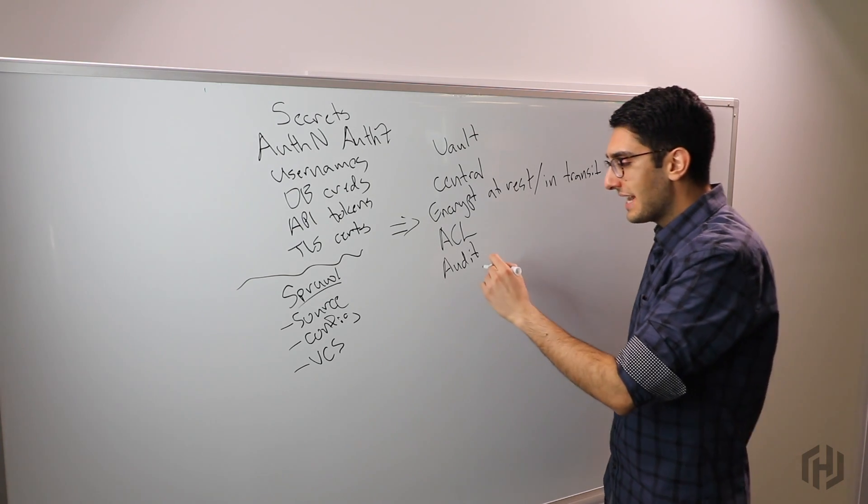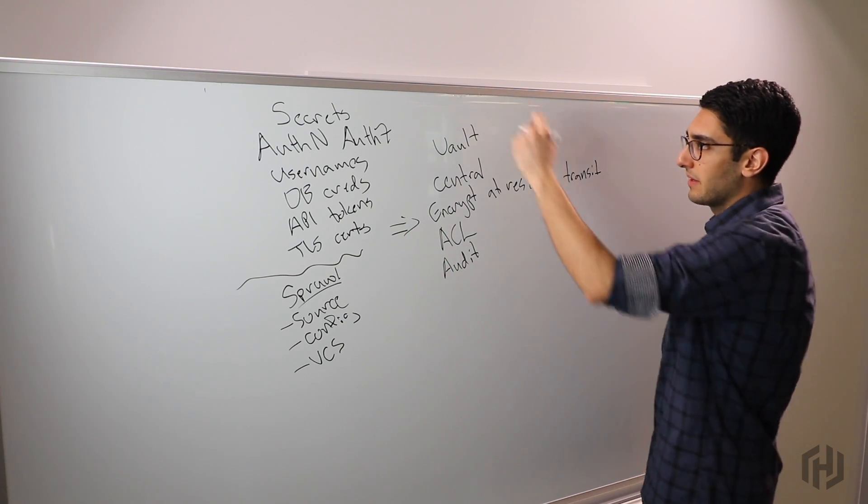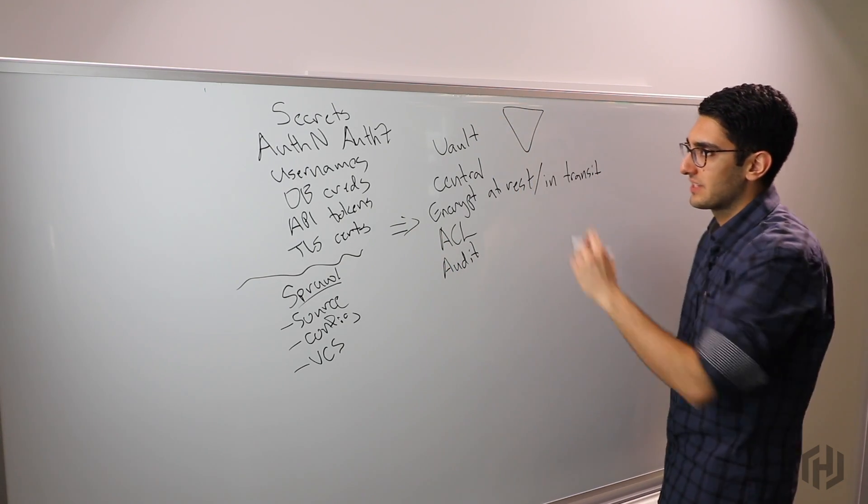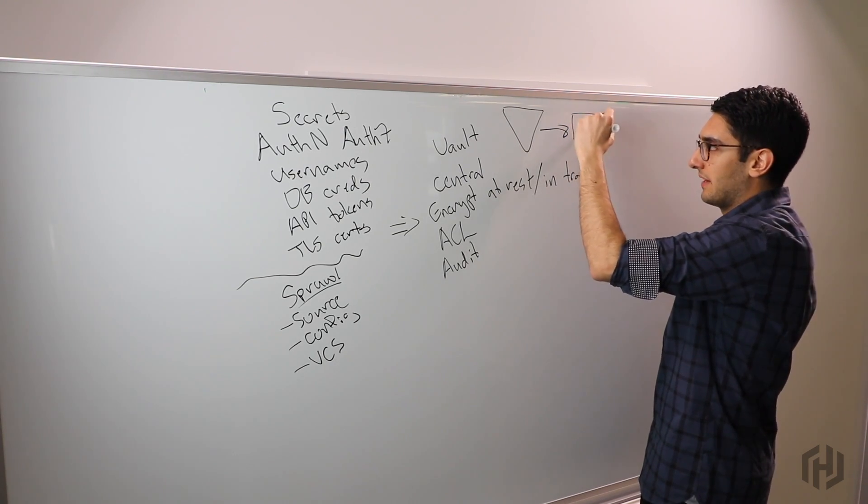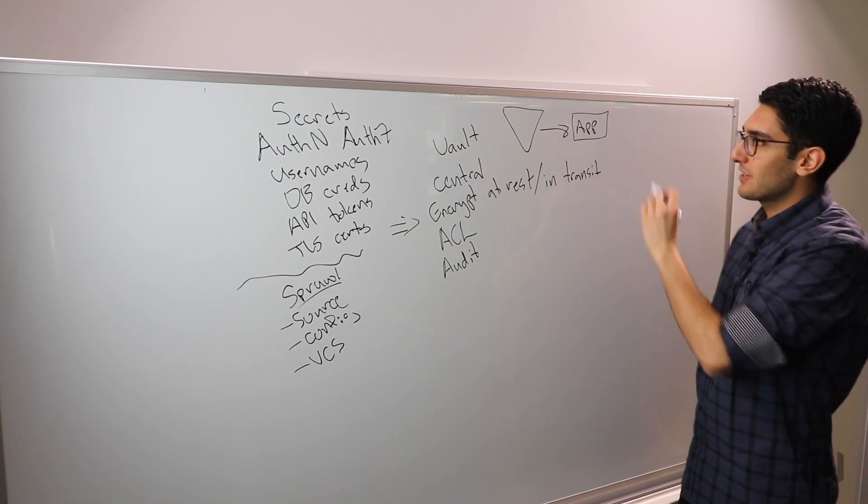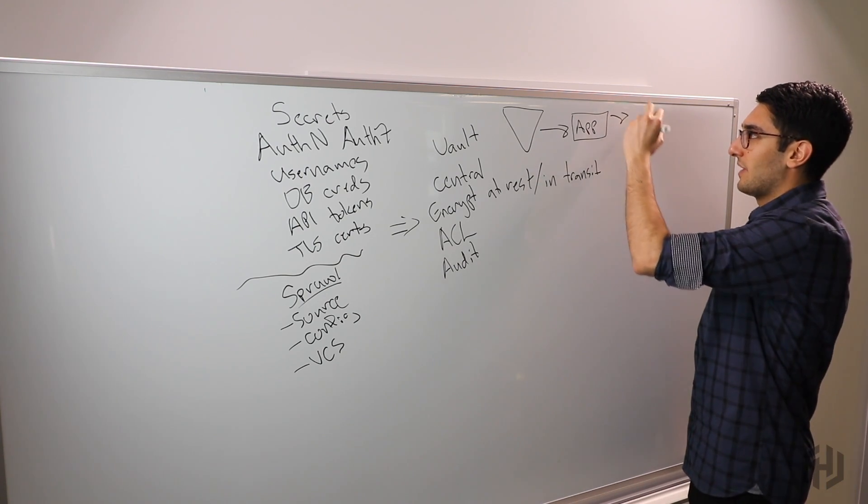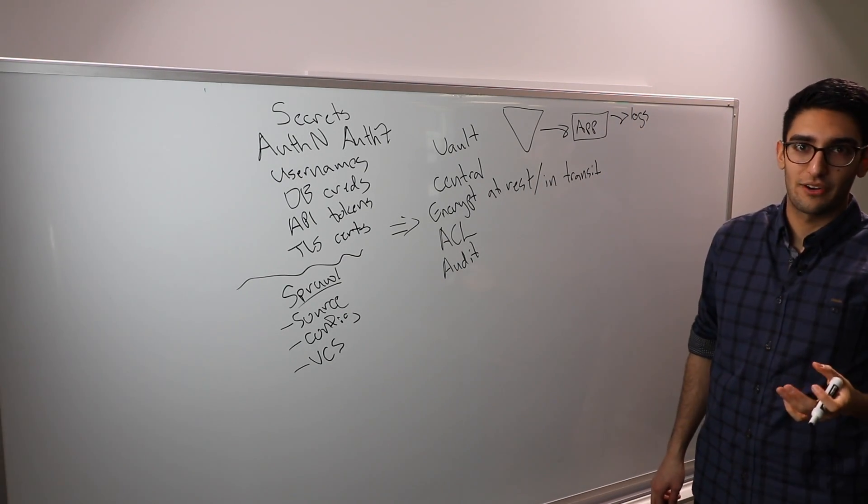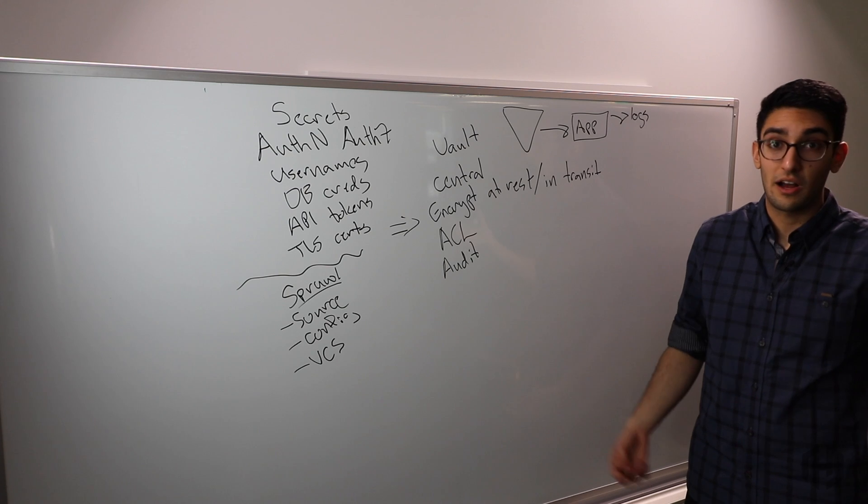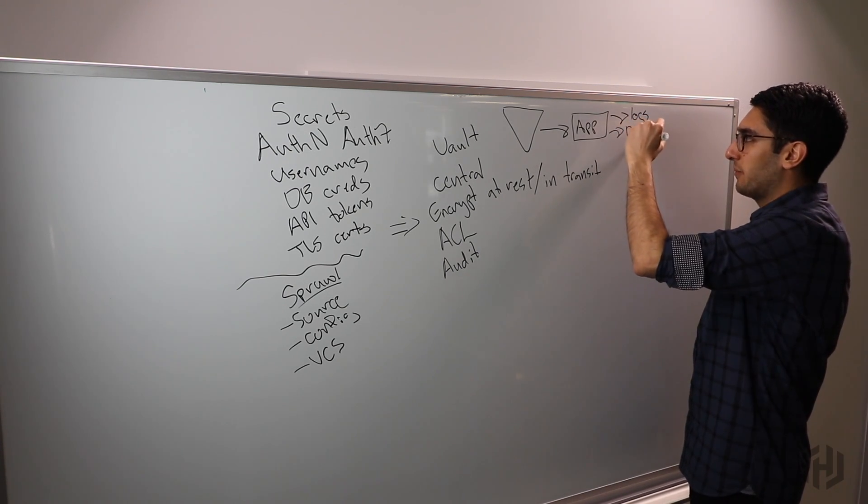The next level challenge becomes realizing who we're giving these credentials to. Great, we've stored all these credentials safely in Vault and now we're going to provide them to an application. The challenge is applications do a terrible job keeping secrets. Inevitably the application will log its credentials out to a logging system. It might write to standard out, which gets shipped off to Splunk and is now in a central log that anyone can see.